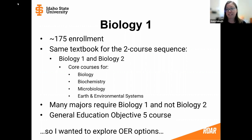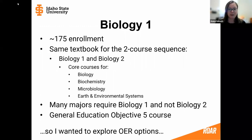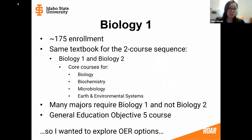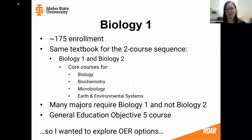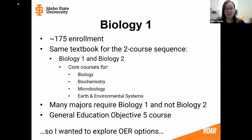That two-course sequence is a core course for several majors here at ISU — biology, biochemistry, microbiology, and earth and environmental systems. But Biology One is also required for many other majors where Biology Two is not. Biology One also counts as a general education objective five course. So there are many students enrolling in Biology One who are not going to go on to take Biology Two and therefore won't use the entire Biology Two textbook.